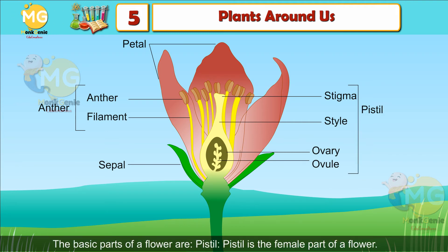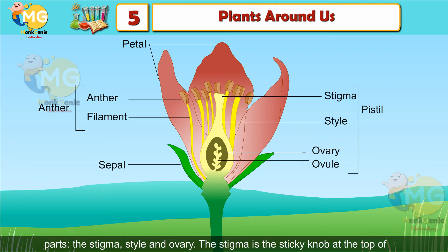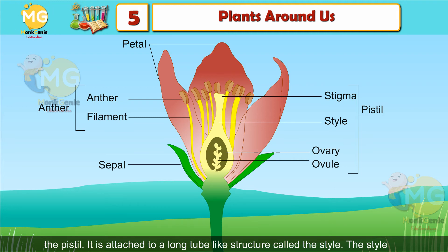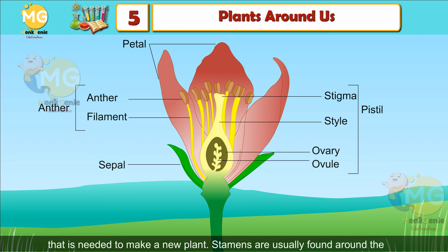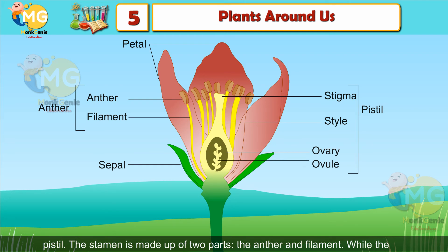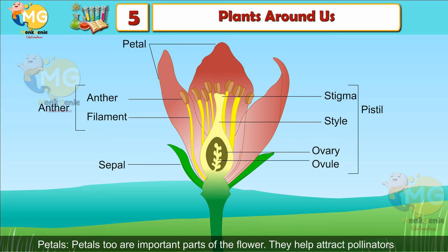The basic parts of a flower include the pistil and stamens. The pistil is the female part of a flower, located in the center. It is made up of three parts: the stigma, the style, and the ovary. The stigma is the sticky knob at the top of the pistil, attached to a long tube-like structure called the style, which leads to the ovary. Stamens are the male parts of a flower, responsible for producing pollen. The stamen consists of the anther and filament; the filament holds the anther up, and the anther produces pollen.